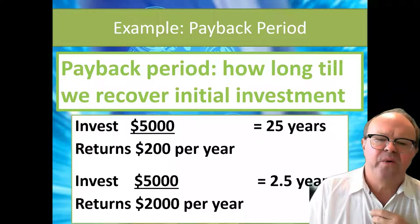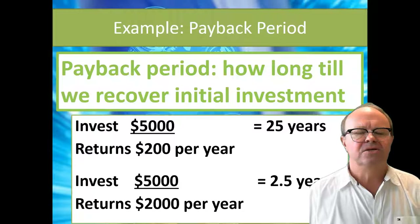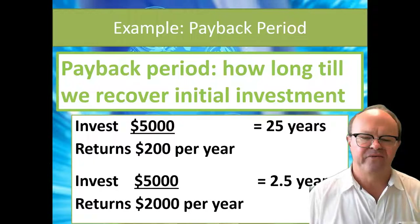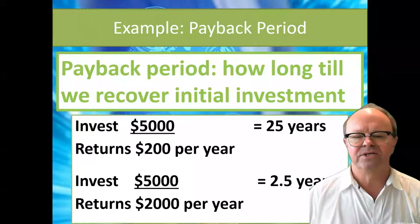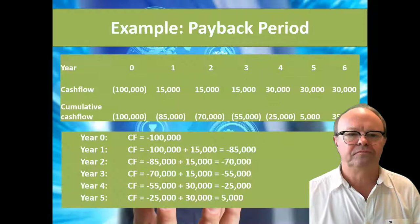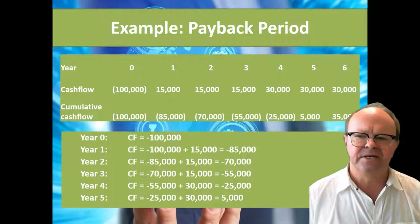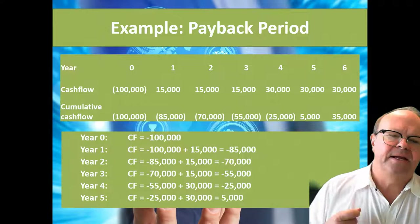If we invest $5,000 and it returns $200 each year, it would take 25 years to get our $5,000 back — that's $5,000 divided by $200. If we invest $5,000 and it returns $2,000 per year, then it's $5,000 divided by $2,000, which equals 2.5 years. So in one case we expect to get the cash back in two and a half years, the other is 25 years. Where the cash flows are not equal every year, which is quite common, we can calculate the cumulative cash flow.